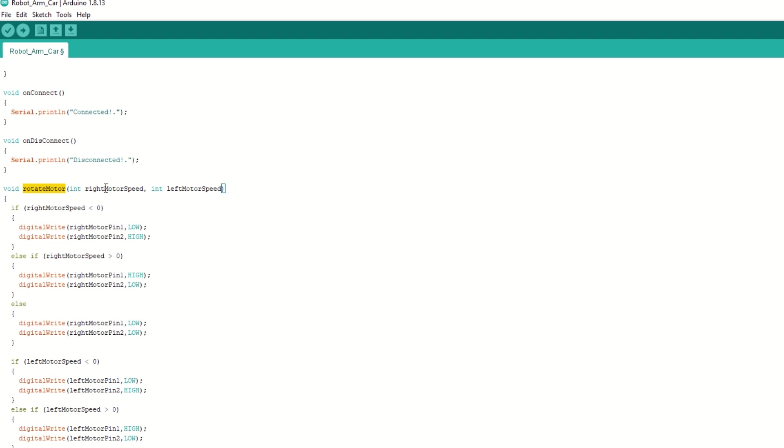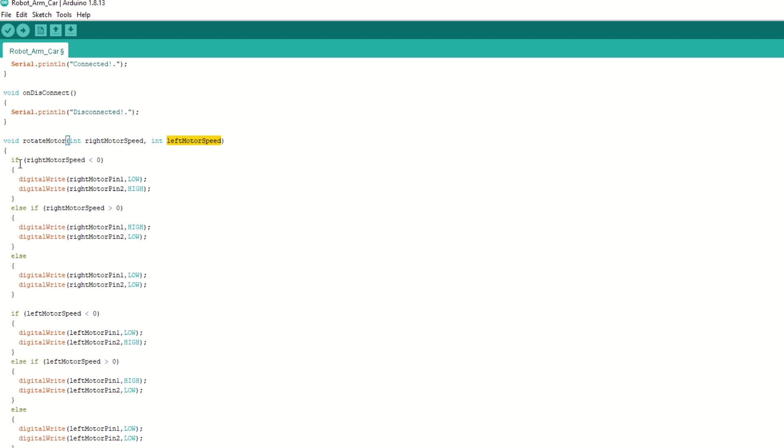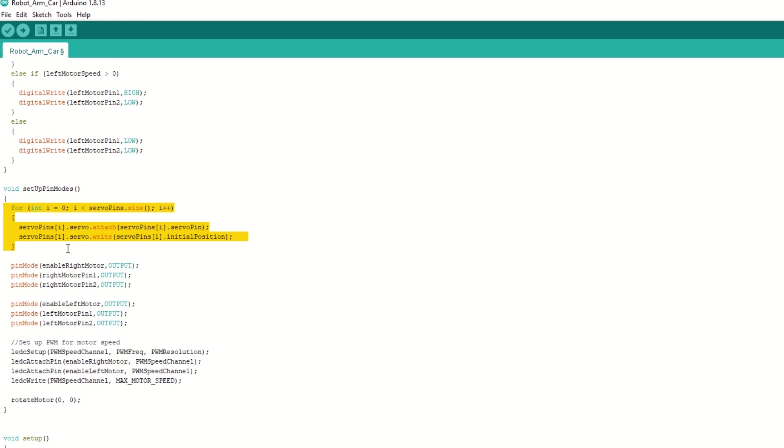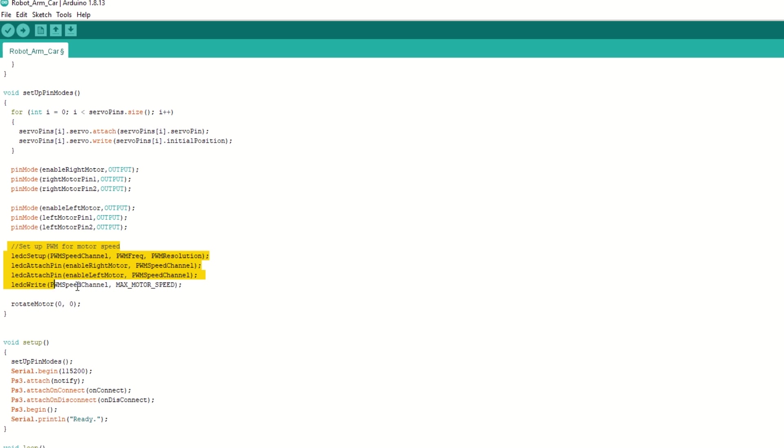We have created rotate motor function which takes right and left motor speed as argument. It will rotate motor in forward or backward direction. We have created setup pin mode function to attach the servo pins to servo objects. It will also set the servo's initial position. We will set the motor pins as output. Also set the PWM channel for speed control. Initially stop all the motors.